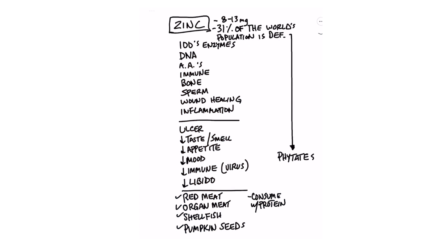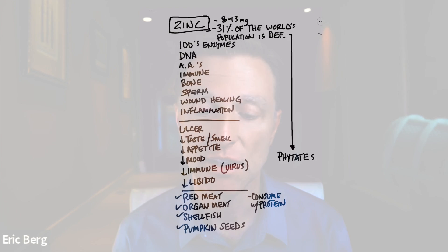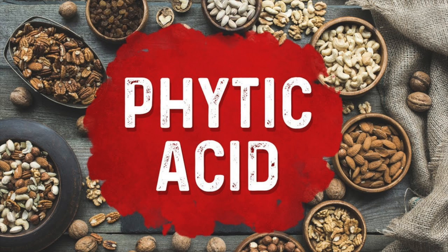Let's move on to zinc. As far as how much zinc you need — between 8 and 13 milligrams, very small amounts. 31% of the world's population is deficient in zinc, according to certain reports. If you've guessed that phytic acid is the reason, you are correct — it's the grains. Grains are loaded with phytic acid, which blocks certain minerals like iron, zinc, and calcium.